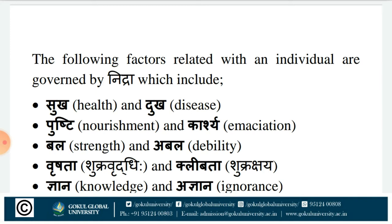These pairs are opposites: Sukha is health, Dukha is disease. Pushti is nourishment and Karshi is emaciation. Bala is strength and Abala is debility or weakness. Vrushadha is Shukravridhi or potency and Klipadha is Shukrakshaya or impotency. Jnana is knowledge and Ajnana is ignorance, and Jeevita means life while its opposite is death. Nidra is having a key role — if practiced in a healthy way, you will be endowed with Sukha, Pushti, Bala, Vrushadha, Jnana, Jeevita, etc. Wrong practice of sleep leads to disease and emaciation.